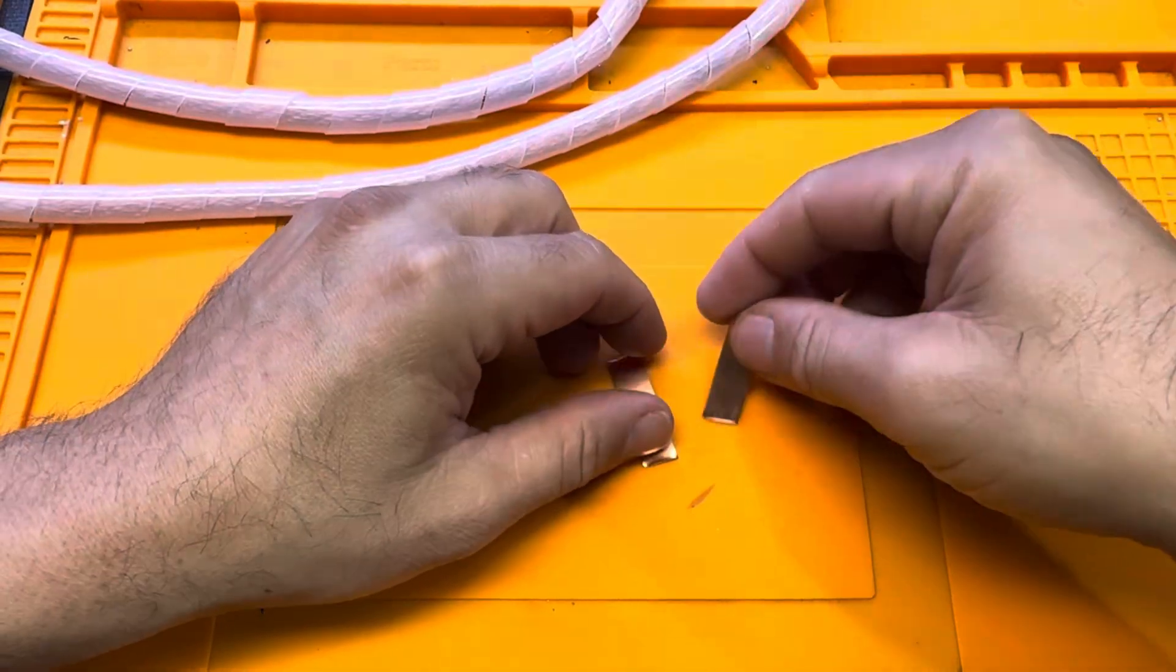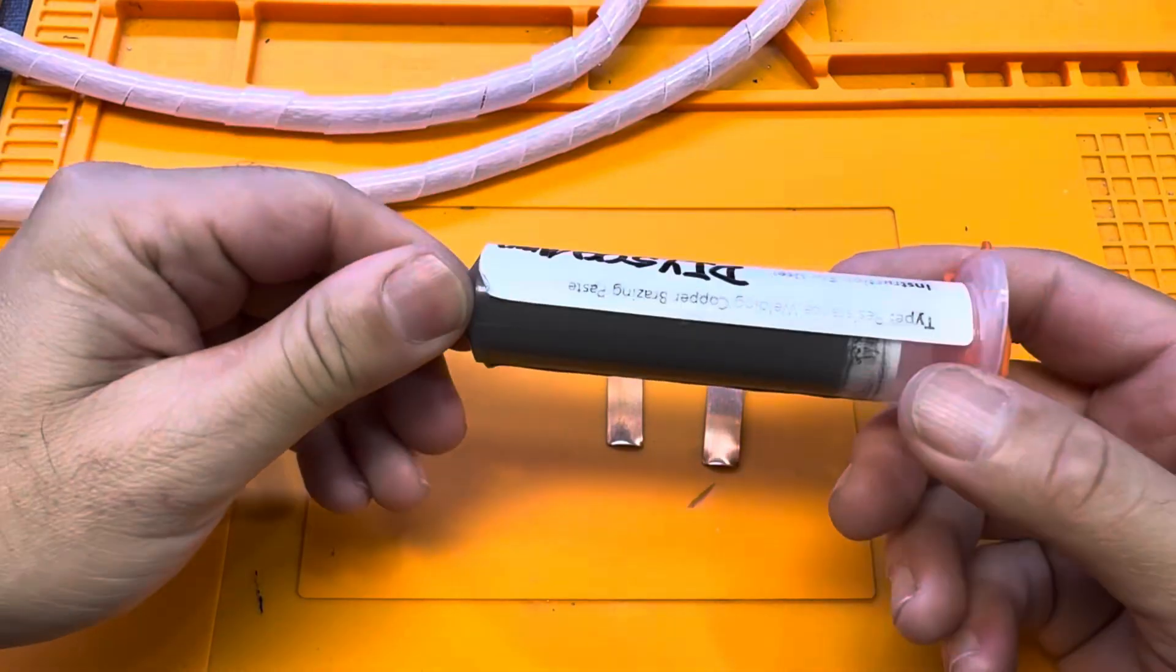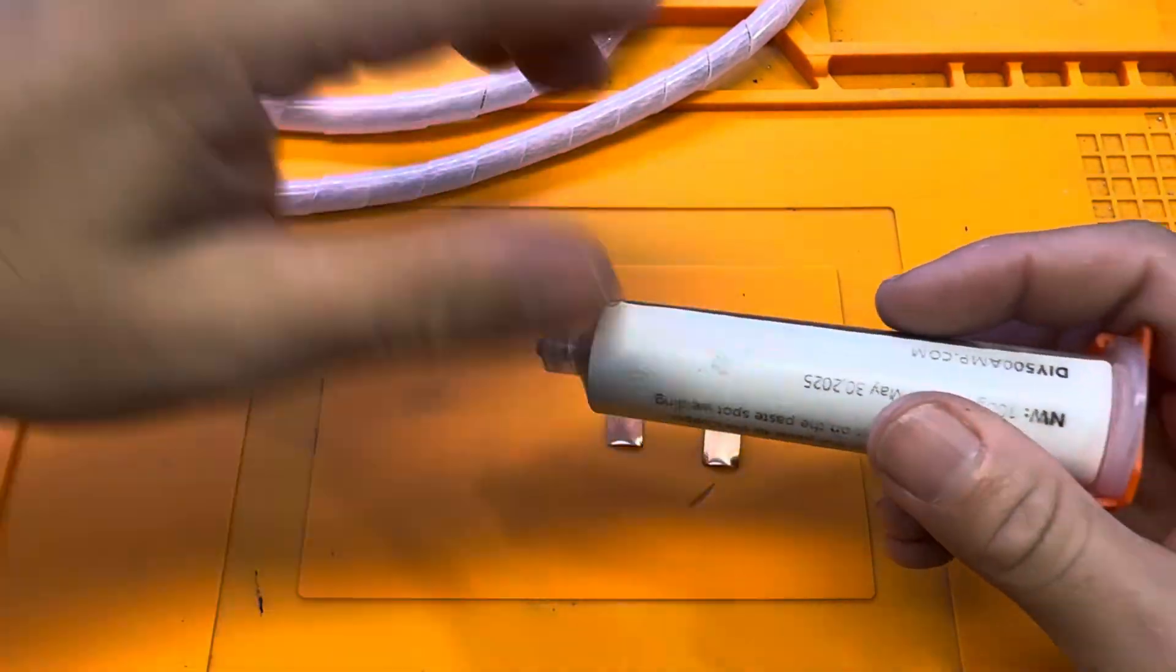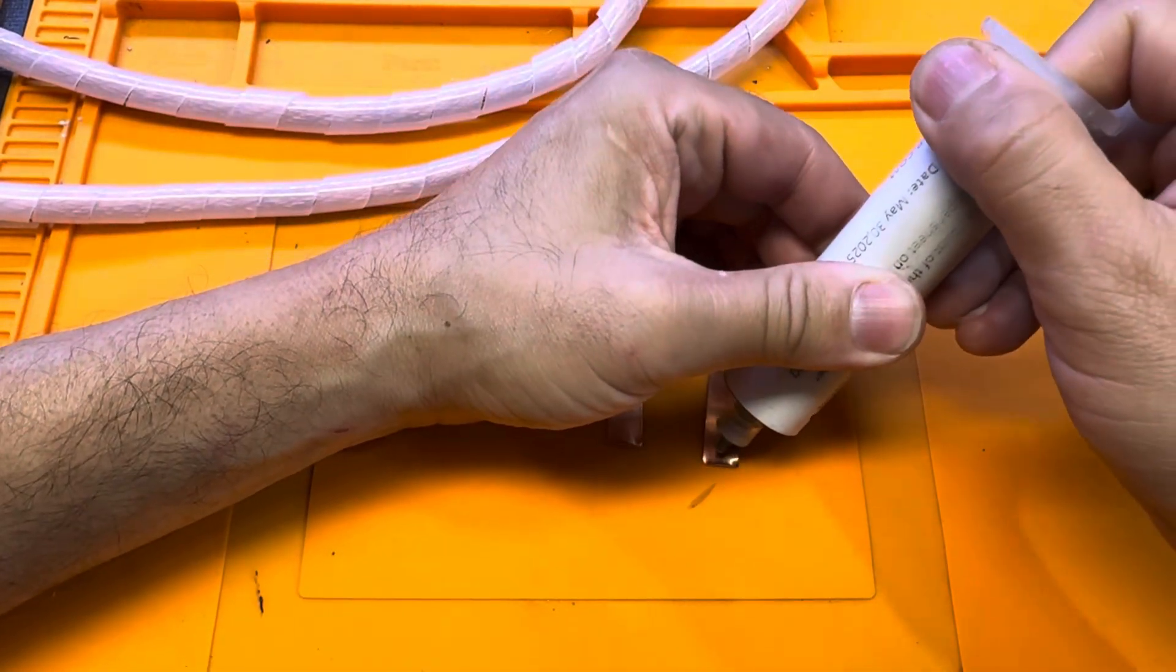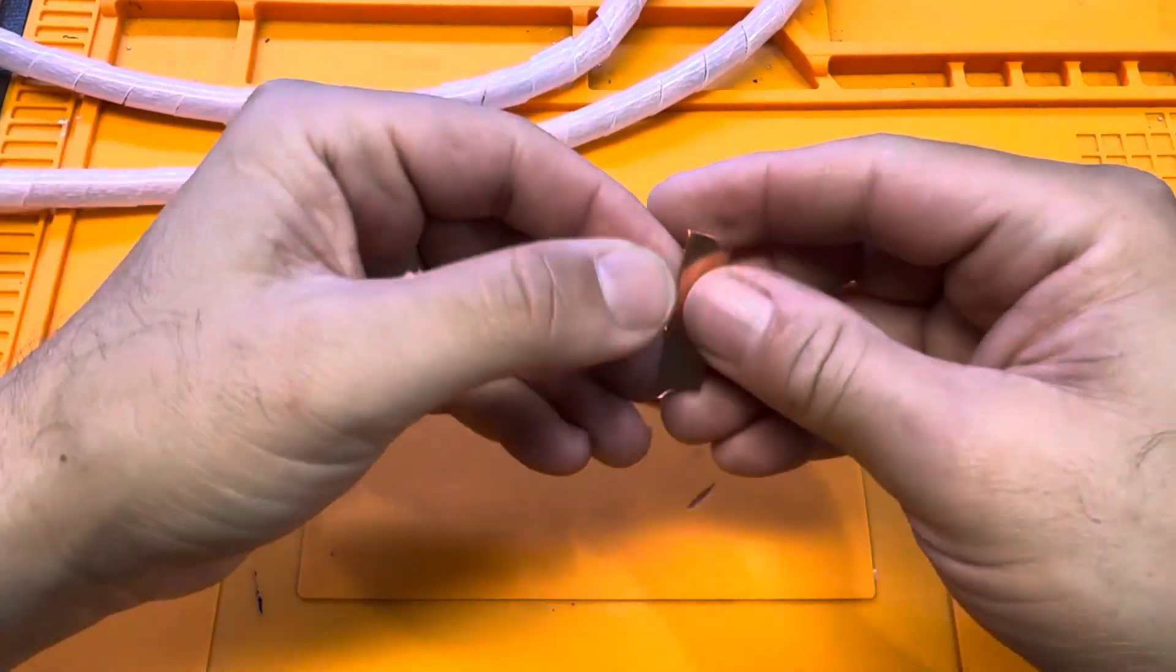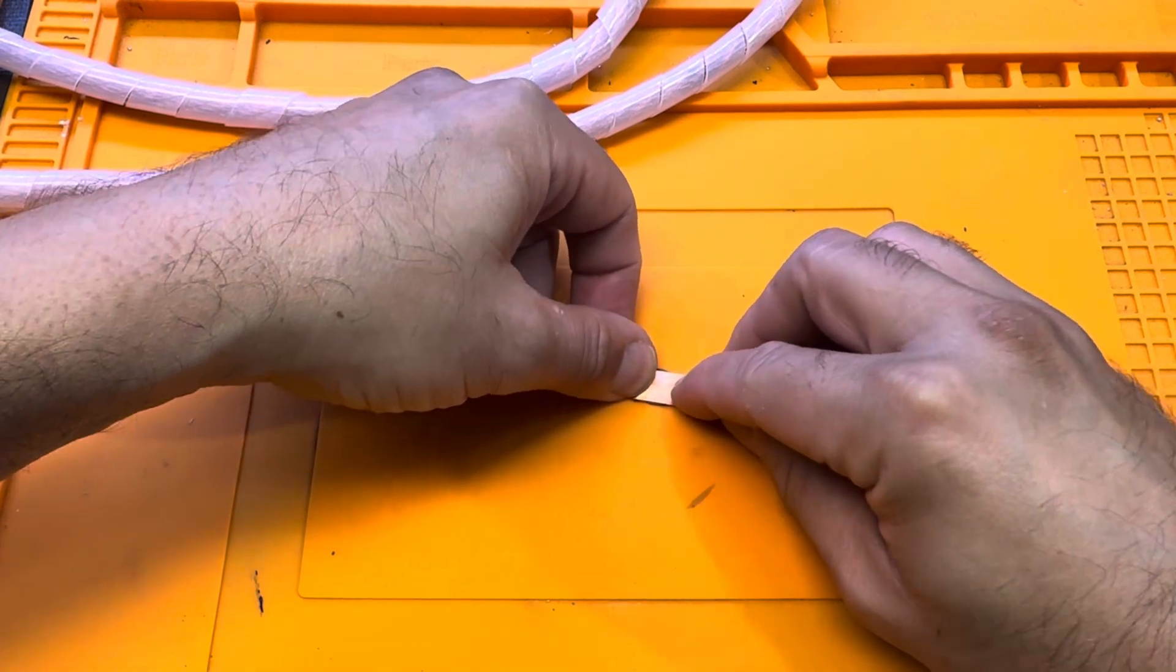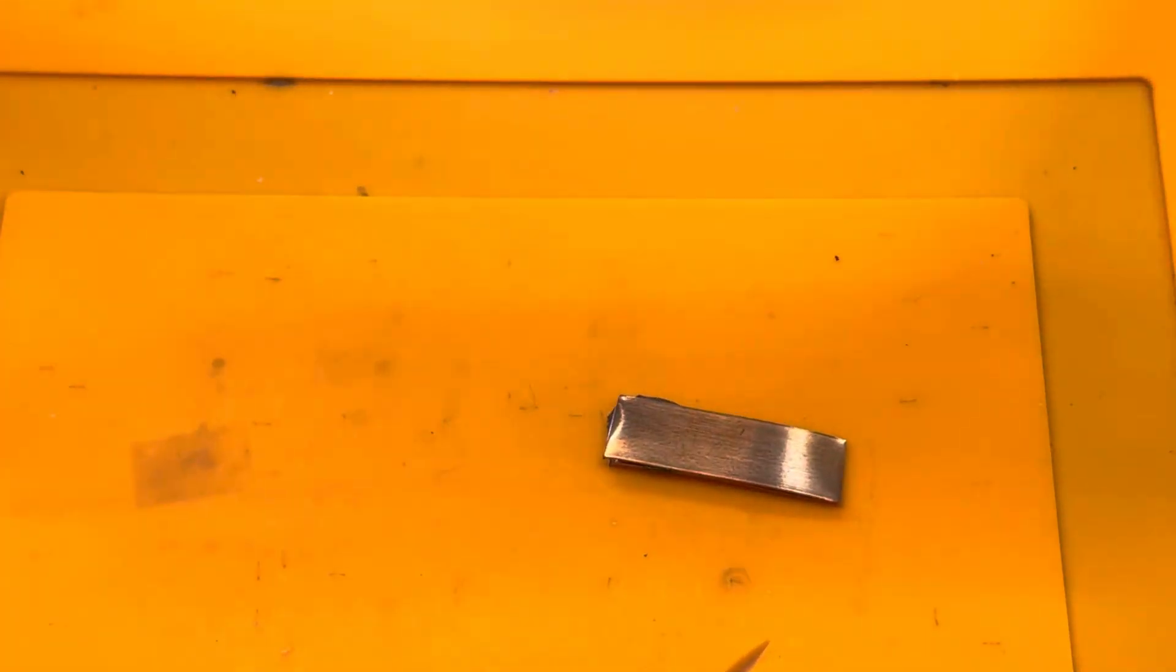And as you know, when we weld copper over 0.3, we always use flux. This is the special flux that we sell in the store. Let's go and put a little bit of this flux since we're going to be welding pretty thick copper. We put this on top and make sure that we have a very well spreaded out flux.